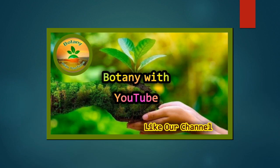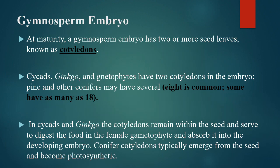If you have any question, you can ask us in the comment section and like our video. If you want to share your point of view related to our topic, you can also discuss with us in the comment section. Gymnosperm embryo: at maturity, a gymnosperm embryo has two or more seed leaves known as cotyledons.